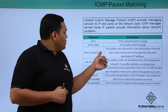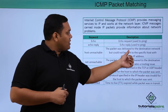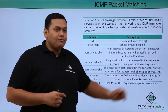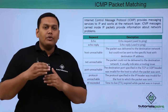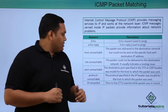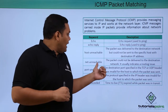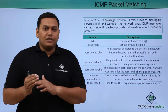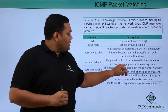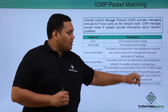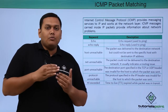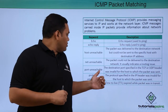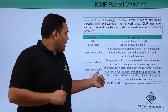Host unreachable: the packet was delivered to the destination network, but it cannot be sent to the specific host using that IP address. Net unreachable: the packet could not be delivered to the destination, and it usually indicates a routing issue.